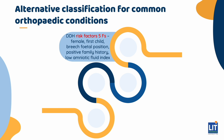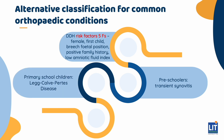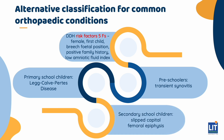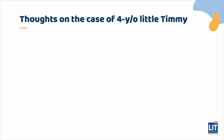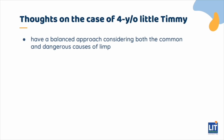Causes of a painful limp can be divided into different age groups. For preschoolers, think of transient synovitis. For primary school children, think of Legg-Calvé-Perthes disease. And for secondary school children, consider slipped capital femoral epiphysis. Of course, the more dangerous causes — trauma, infections, and cancers — must be considered in all ages. When thinking about little Timmy and his limp, it's necessary to have a balanced approach considering both the common and dangerous causes.